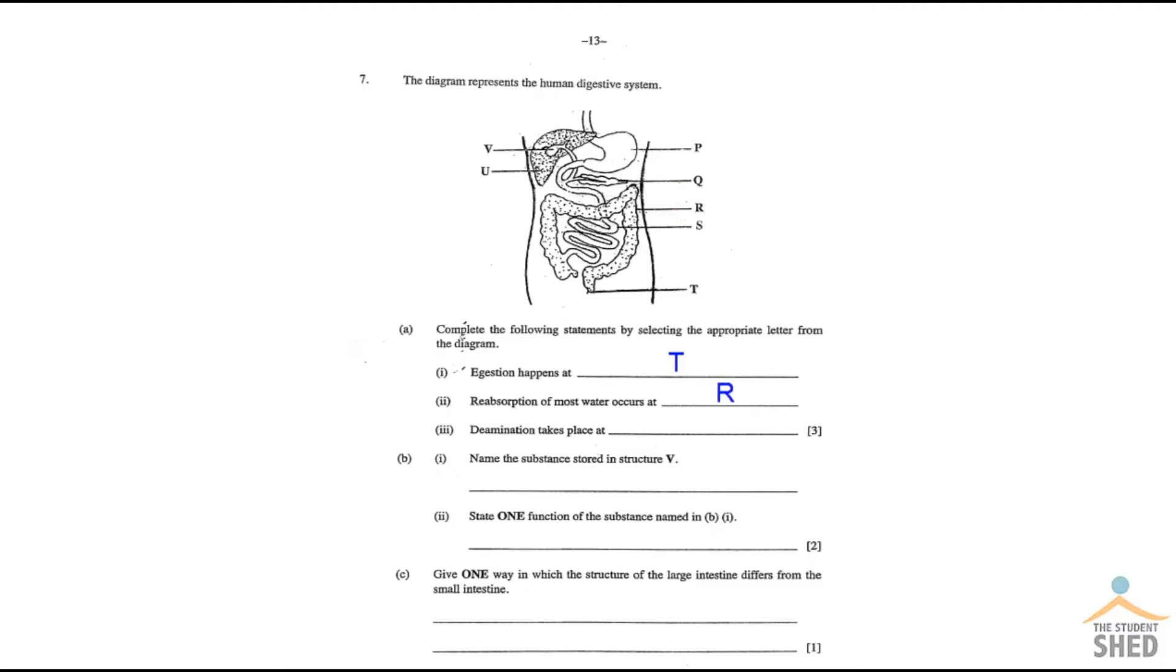Now deamination takes place where. This is one of those words, if you're looking at this question now and you're not sure what deamination is, you need to go and look it up. Now deamination happens in the liver. So what's being asked for you here to work out is which one of these structures is the liver, and the answer there of course is U.